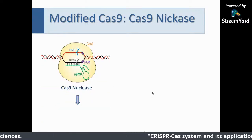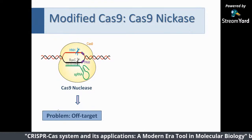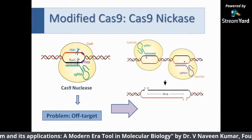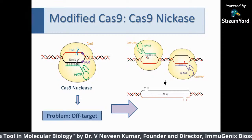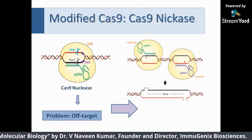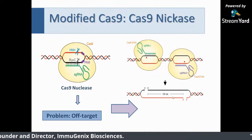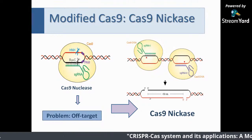The modified Cas enzyme can really reduce off-target effects. Why? Because instead of cutting a double-strand break, they modified it into a single-strand cut so that cutting only occurs when there is close affinity. This results in specific cutting and fewer off-target effects. You can also use paired nickases with two adjacent loci targeted simultaneously, improving specificity further.